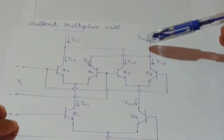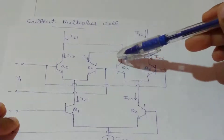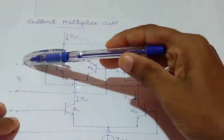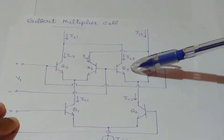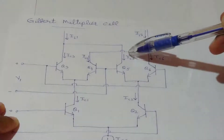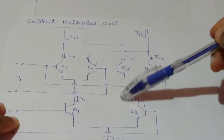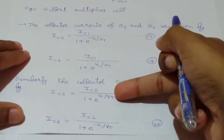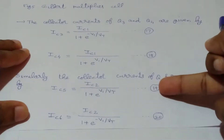Similarly, for the emitter coupled transistor pair formed by Q5 and Q6, the differential input voltage is also V1. Here the positive terminal of V1 is connected to the base of Q6 and the negative terminal to the base of Q5. The biasing current is IC2. Thus IC5 equals IC2 divided by (1 + e raised to V1 over Vt), and IC6 equals IC2 divided by (1 + e raised to minus V1 over Vt). These are equations 19 and 20.